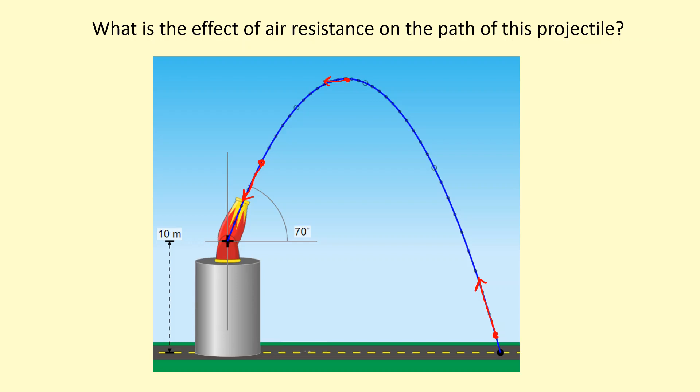The air resistance is the largest where the particle object is moving the fastest. So at the beginning, it's moving quite fast, so the air resistance is going to be quite large. And towards the end, where it's also moving quite fast, it's going to be quite large.